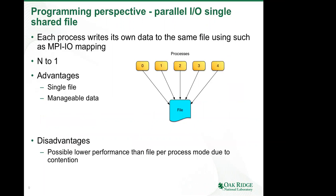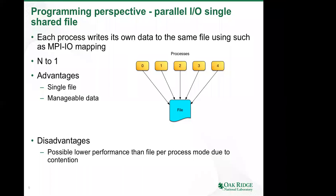The third method is the single shared file method. In this access method, each process writes its own data to the same file, and each process must carefully calculate the offset to avoid overwriting each other's data. Because you end up with one single file, this is called N-to-1. The advantage is it's very manageable and with a relatively straightforward approach you can achieve decent to very good performance. The caveat is it very much depends on how well the underlying library and the PFS can support this kind of single shared file access.